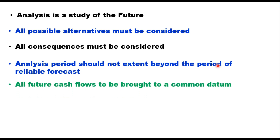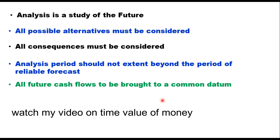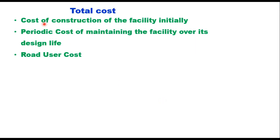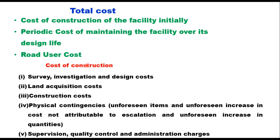All future cash flows must be brought to a common date. The present and future costs and benefits occur at different times, and in order to evaluate them on a common basis, they should be brought to a common date. This is called discounted cash flow and it is based on the concept of time value of money. The total cost of a project has three components: cost of initial construction, periodic cost of maintaining the facility over its design life, and residual cost.